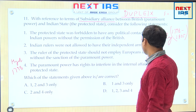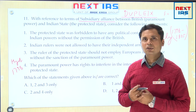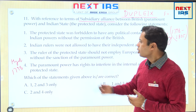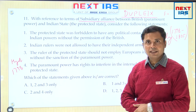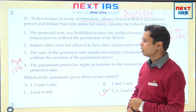Once Tipu was defeated and killed in the battle, the Wadiyars got back to power with the help of the Company and subsidiary alliance was imposed on them. So all four options — 1, 2, and 3 — wait, in question 11 with reference to subsidiary alliance, statements 1, 2, and 3 are correct but 4 is wrong — the answer will be D.